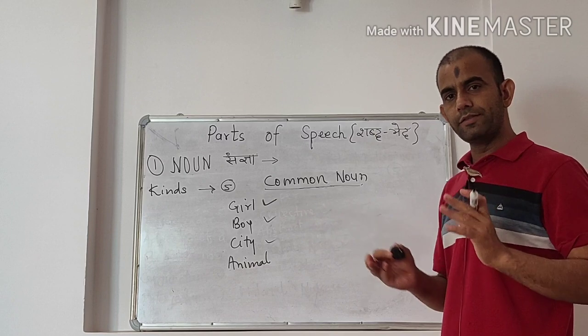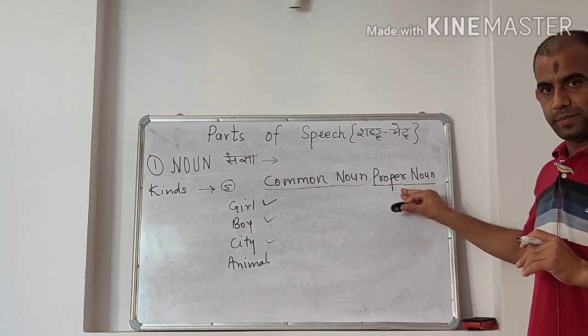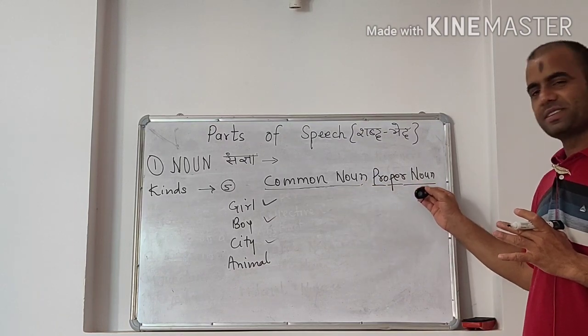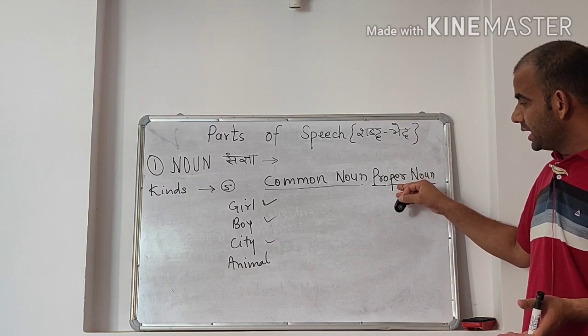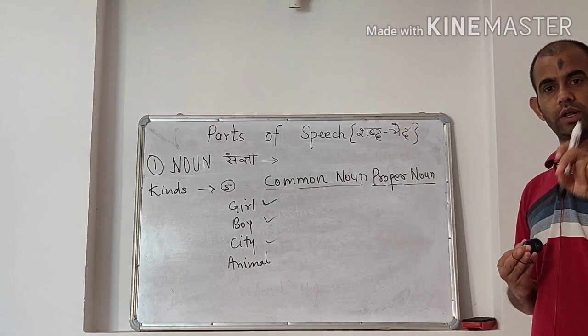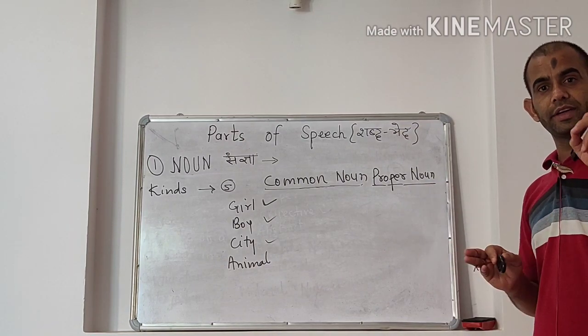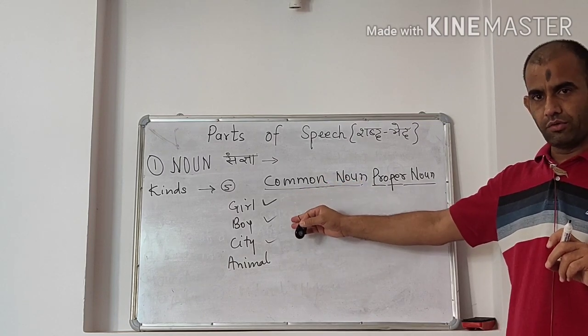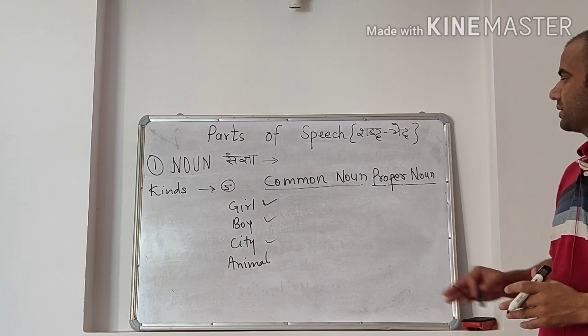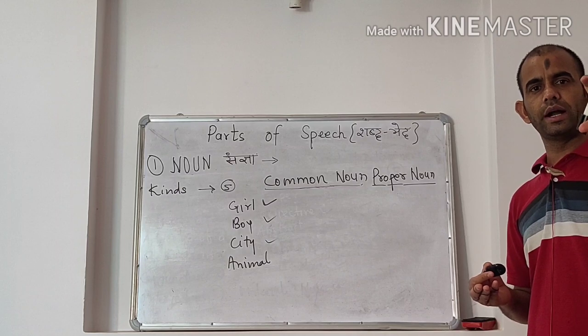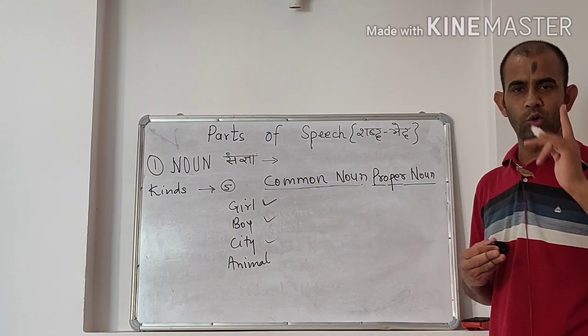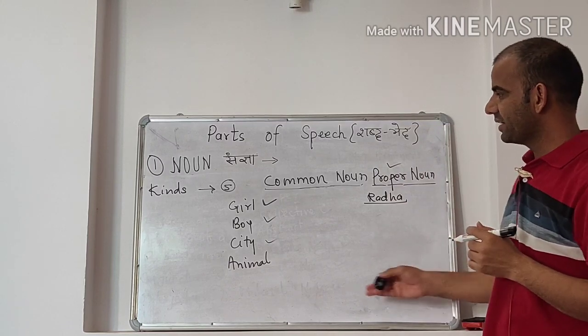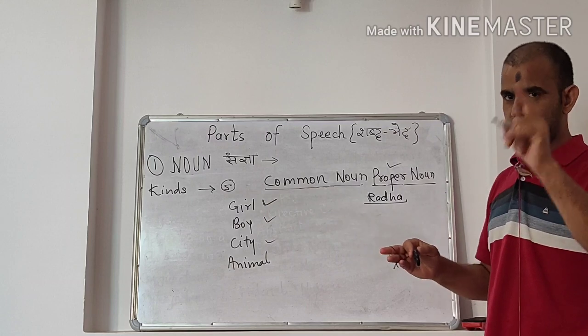Common noun is a name given commonly to any person or thing. Now is proper noun and this is opposite to common noun. What is its definition? Its definition is in proper noun we give a name, a particular name or you can say we give an identification of that common person or thing. Girl is a common noun but Radha is a proper noun because we have given an identity to the girl and that particular girl is Radha.